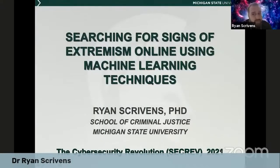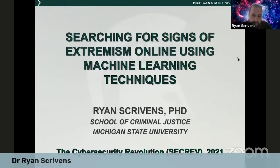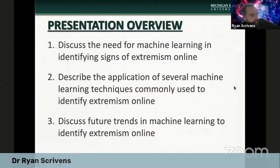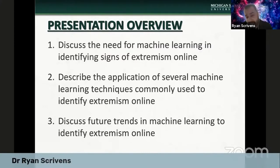Thanks very much, Tom. My name is Dr. Ryan Scrivens. I'm an assistant professor in the School of Criminal Justice here at Michigan State University. The title of my talk is 'Searching for Signs of Extremism Online Using Machine Learning Techniques.' I'm going to provide first a bit of an overview of the need for machine learning in identifying signs of extremism online, followed by a description of several applications and machine learning tools commonly used, followed by a discussion of future trends.